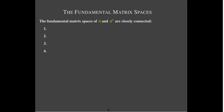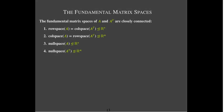Now A and A transpose are connected very closely, and their matrix spaces are as well. It makes sense that if the rows of A are the columns of A transpose, then the row space of A is going to be the column space of A transpose, and those live in R^n, where n is the number of columns in A. The column space of A is the same as the row space of A transpose, and they live in R^m. The null space of A belongs to R^n, whereas the null space of A transpose belongs to R^m.